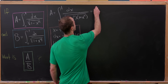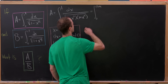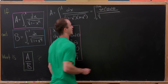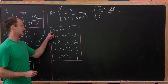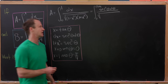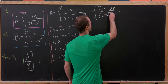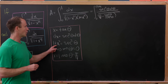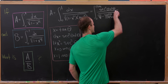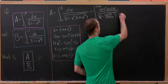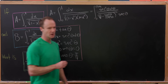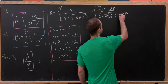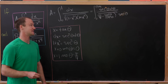Substituting in, we get the integral from 0 to pi over 4 with secant squared theta d theta in the numerator. In the denominator we have the square root of (1 minus x squared) times (1 plus x squared), which becomes the square root of (1 minus sine squared theta over cosine squared theta) times secant squared theta. Taking the square root of the secant squared factor gives just secant theta. Notice this secant cancels with the secant squared in the numerator, leaving just a secant in the numerator.